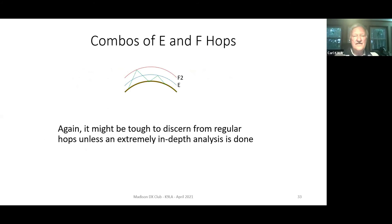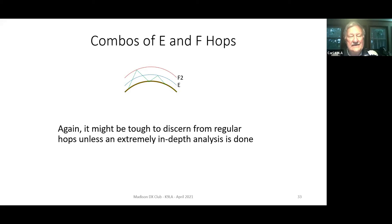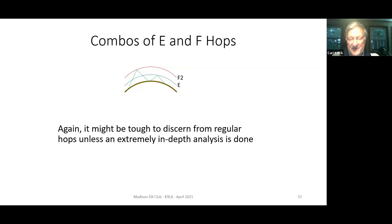There can be combinations of E and F hops - it goes up to the F layer at first and comes back down and then goes to the E layer. It could be tough to discern from a regular hop unless an extremely in-depth analysis is done. If you have ionosonde data you might be able to figure it out, but usually ionosondes follow Murphy's Law in that the more you need an ionosonde in a specific spot, the less probability that there's going to be one there. And even if one's there, it may not have taken data. So lots of effort to try and understand some of this stuff.